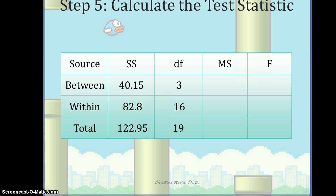Lastly, we have the total degrees of freedom. There are two ways to compute it: you can take the total number of participants — which we saw was 20 — and subtract one; or you can add the degrees of freedom within and between. In this case, our degrees of freedom total is 19.